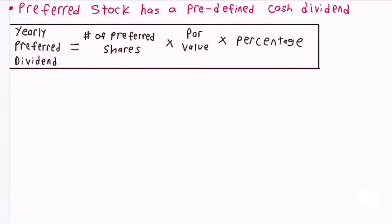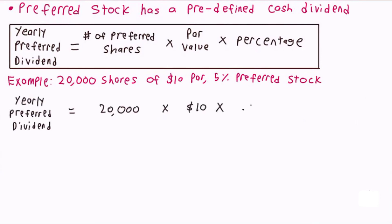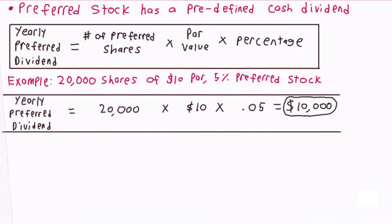For example, a company with 20,000 shares of $10 par 5% preferred stock would have a yearly preferred dividend equal to 20,000 times $10 times 0.05, which equals $10,000. This means that the first $10,000 of dividends would go to preferred shareholders. If more than $10,000 were paid in dividends, the additional amount after $10,000 would be paid to common shareholders.